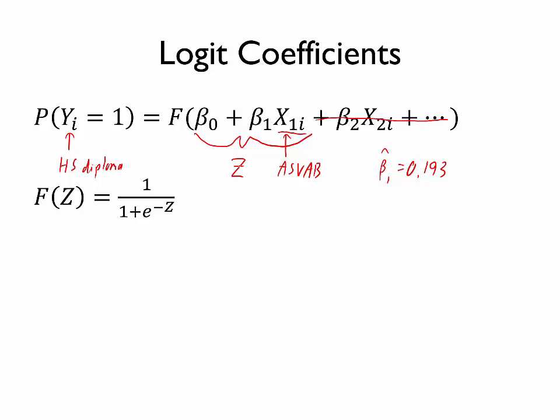So rather than trying to interpret beta 1 hat on its own, let's try to answer the same question that we addressed using a linear probability model, namely what is the marginal effect of an additional test point on the probability of getting a high school diploma. So one thing to recall is that a marginal effect can also be written as a derivative. And so we are interested in the derivative of the probability of this outcome, namely that the individual has a high school diploma. That derivative is taken with respect to the ASVAB score, so x1 in this case.